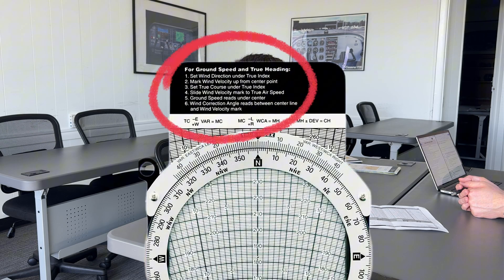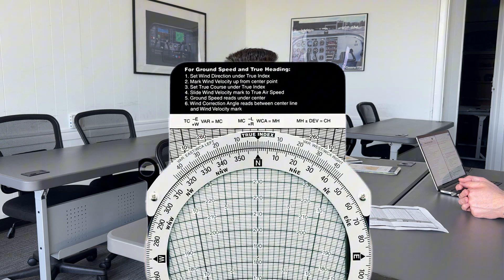How did you arrive at your ground speed? I used my E6B — I inputted everything, turned the wheels, and got my ground speed. What determines your cruise ground speed? Wind is the primary factor affecting ground speed.